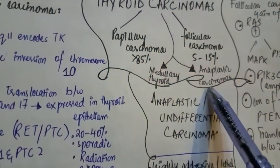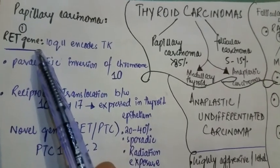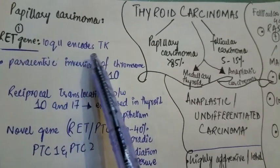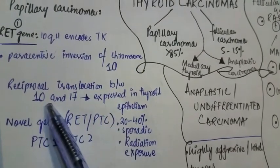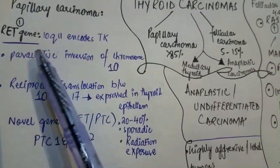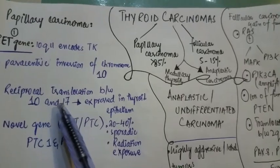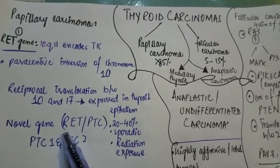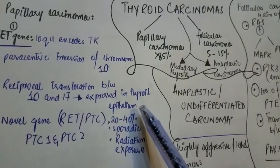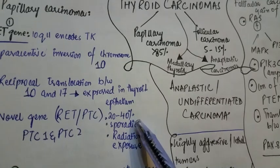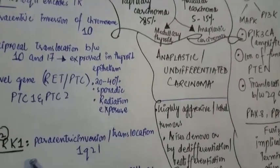The pathogenesis of papillary carcinoma involves a mutation in the RET gene, present on chromosome 10, which encodes tyrosine kinase. A paracentric inversion of chromosome 10 or reciprocal translocation between chromosomes 10 and 17 causes a gain of function in RET, resulting in over-functioning of tyrosine kinase. This translocation forms the novel gene RET/PTC — a papillary carcinoma-associated gene, type 1 and type 2 — expressed in thyroid epithelium, present in 20 to 40% of cases and associated with sporadic papillary carcinoma. Radiation exposure increases the risk.